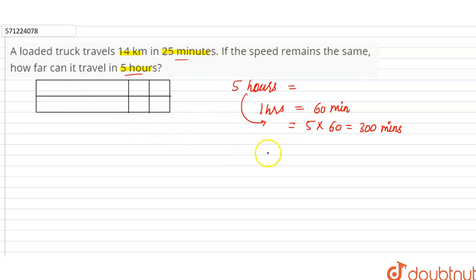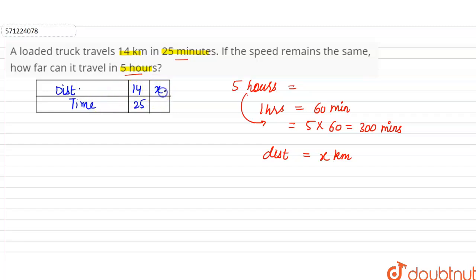Let's take the distance as x kilometers. Our table will have two columns: distance and time. When distance is 14 kilometers, time taken is 25 minutes. When distance is x kilometers, time taken is 300 minutes.